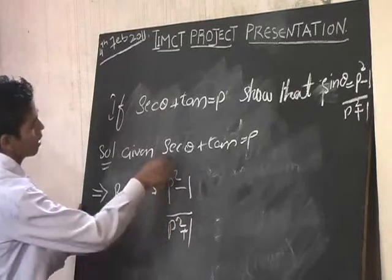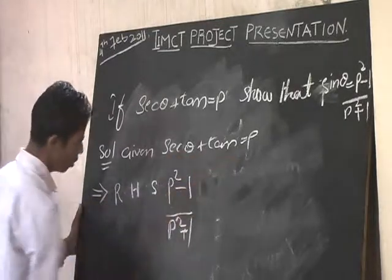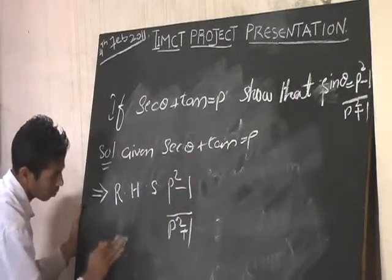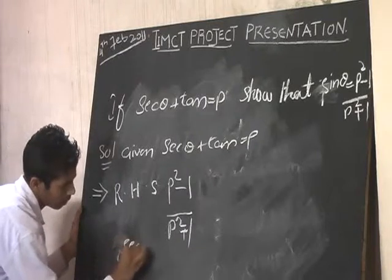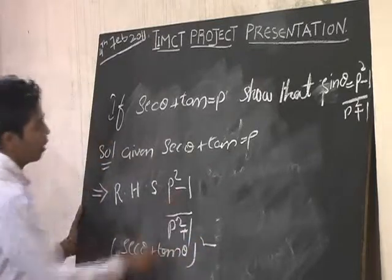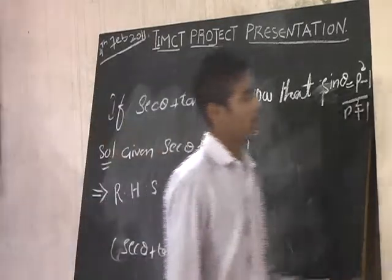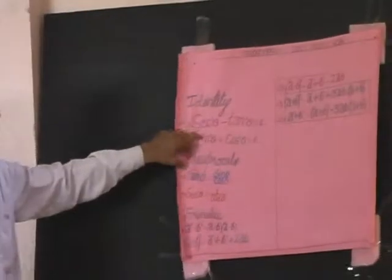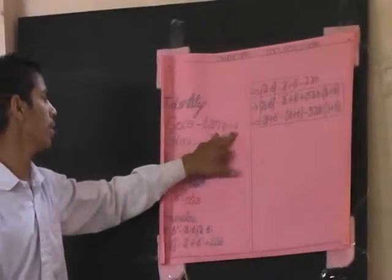The P is sec theta plus tan theta. We square this. We know that sec squared theta minus tan squared theta equals 1. Instead of 1, substitute this identity value.